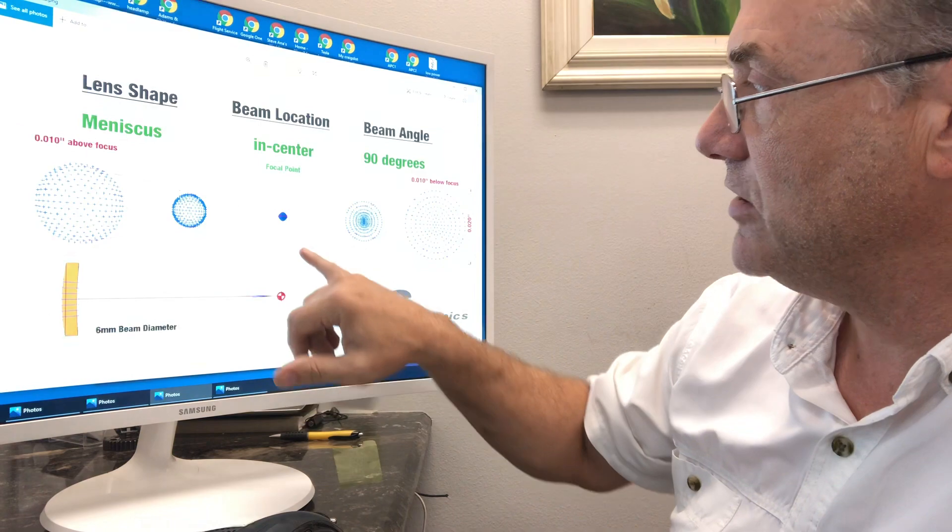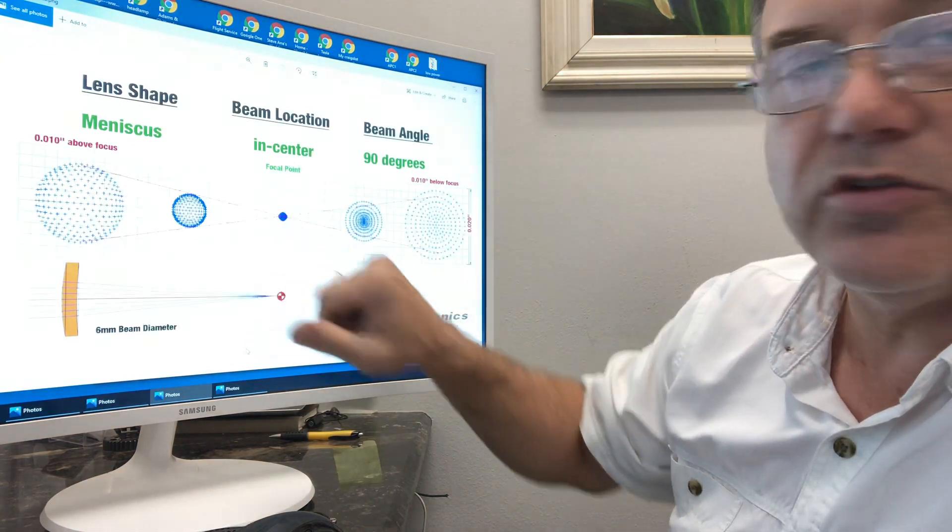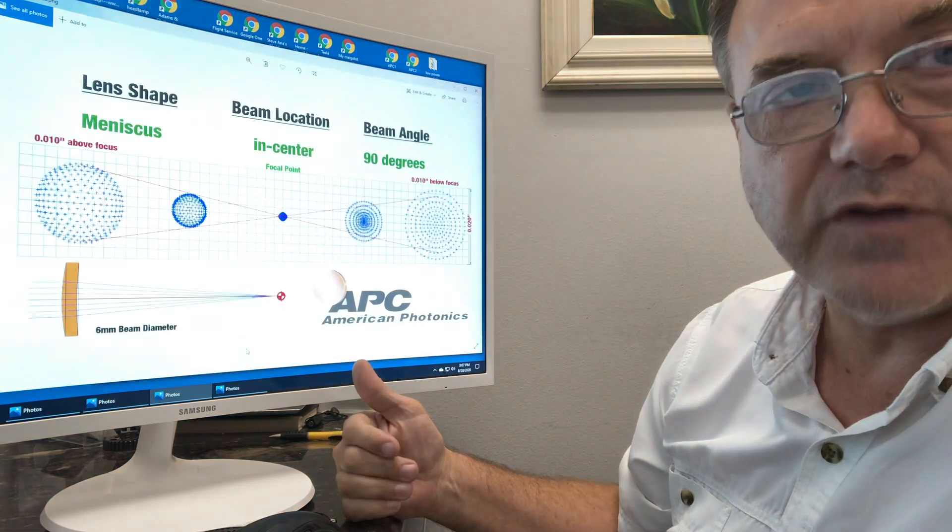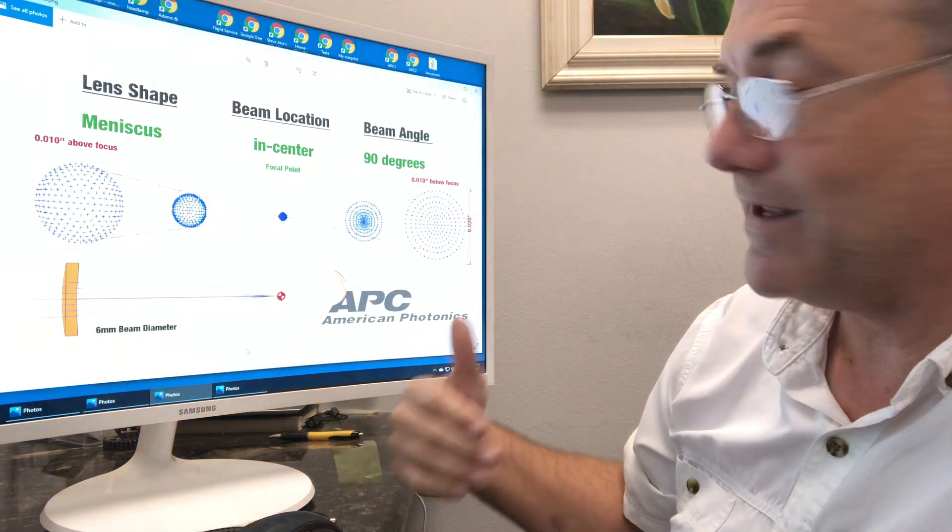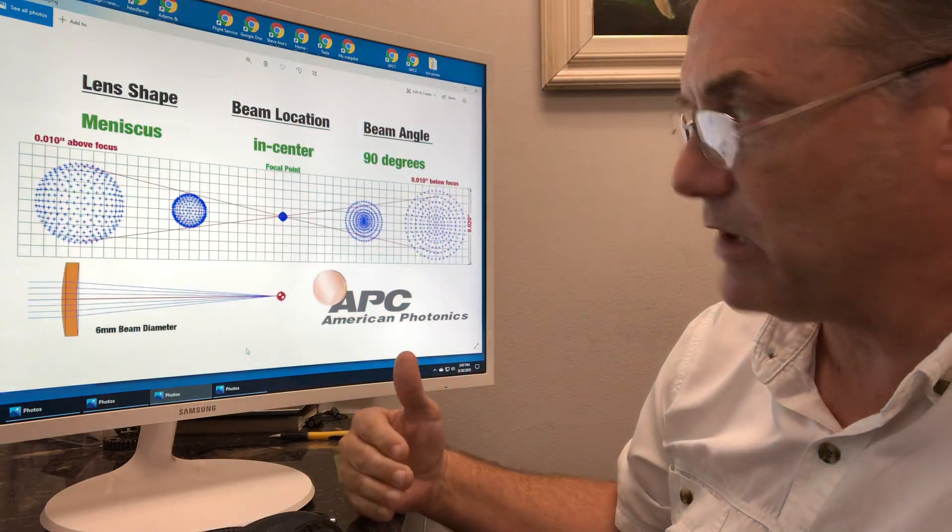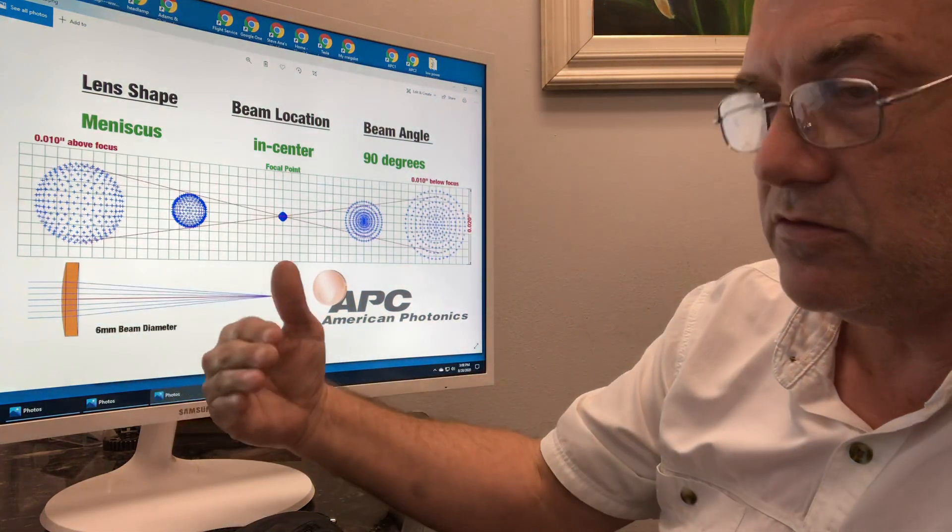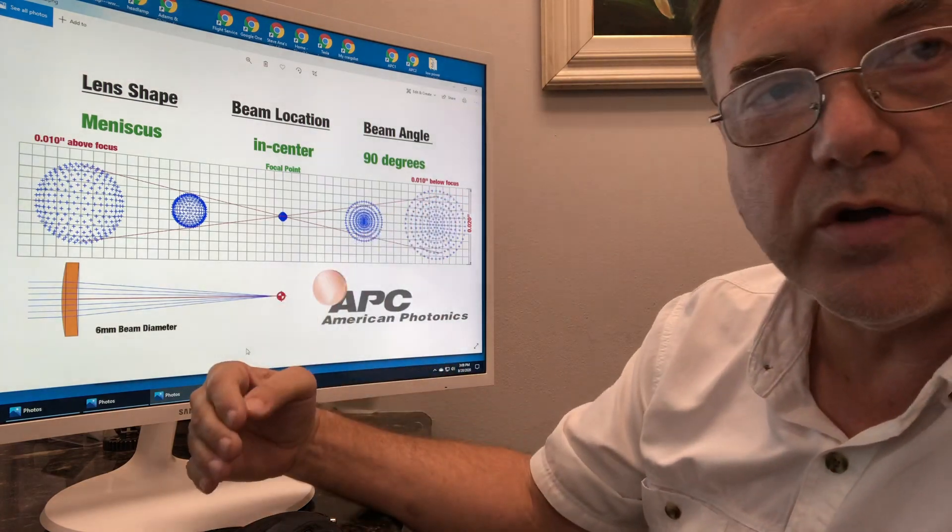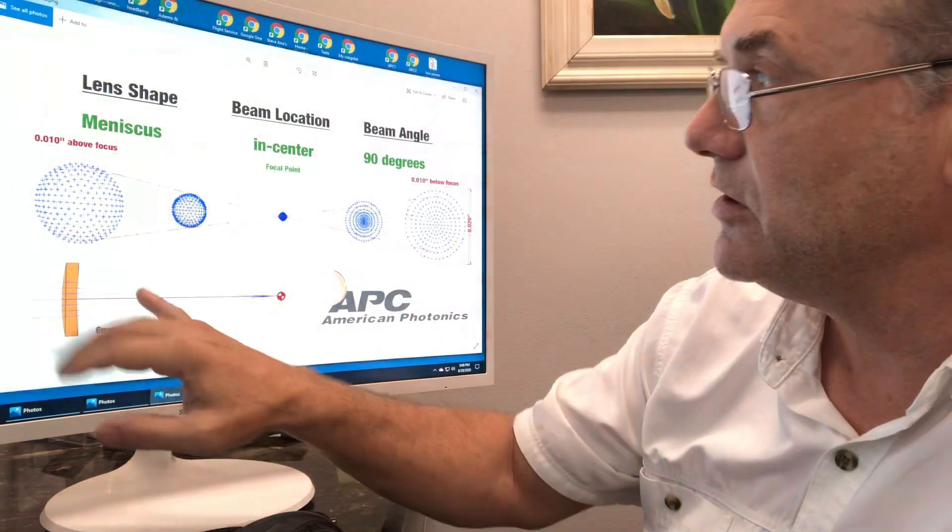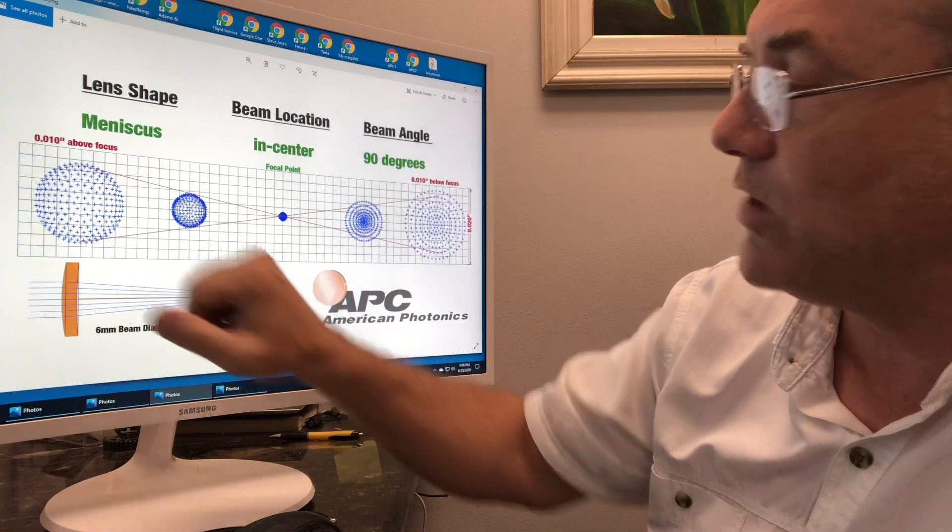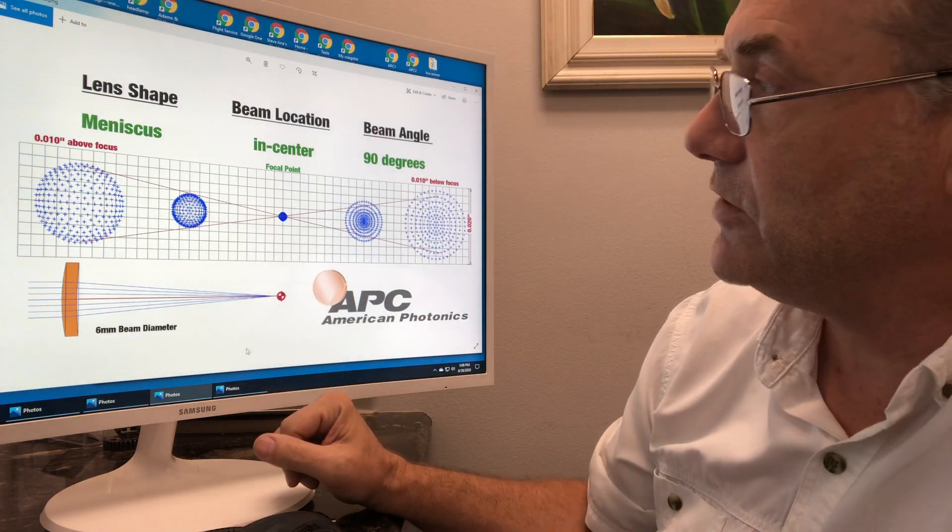Now, on a meniscus lens, you'll notice the best you're going to get is about a 2-thousandths spot size, or about 0.05. That's the theory, that's the perfect beam alignment to everything else. Something interesting to note, when the beam, if you have a good beam quality coming in from your laser, evenly dispersed, as it comes down, you have more energy around the outside edge than you do in the center.